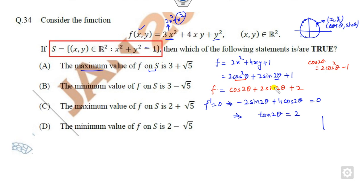From here you can find, and also find the second derivative. The second derivative is -4cos(2θ) - 8sin(2θ). It can be less than or greater than zero depending on the values. Now you can find the value of cos and sin. The value of tan(2θ) is 2/1.